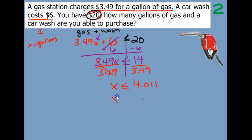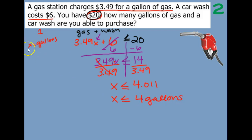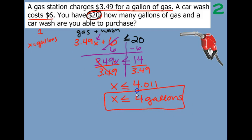So if we round that, I would say x is less than or equal to 4 gallons of gas. Remember, x represented the number of gallons. So we can get less than or equal to 4 gallons of gas, but we can't get any more than that.